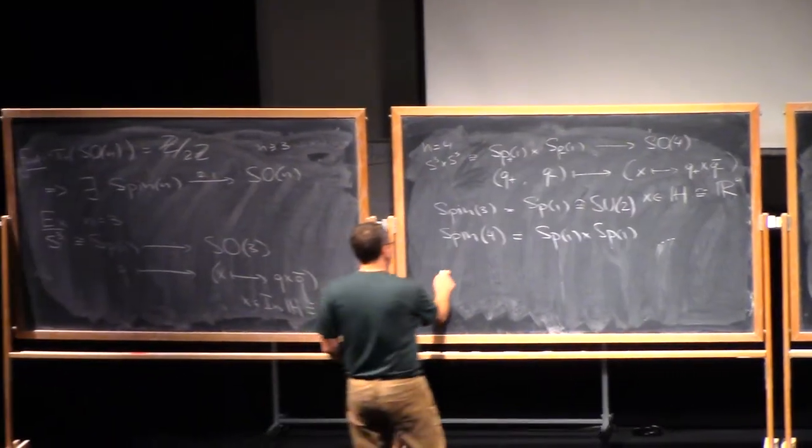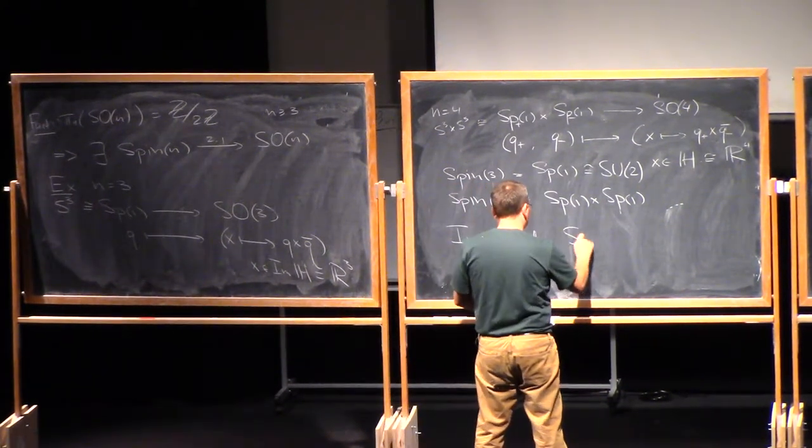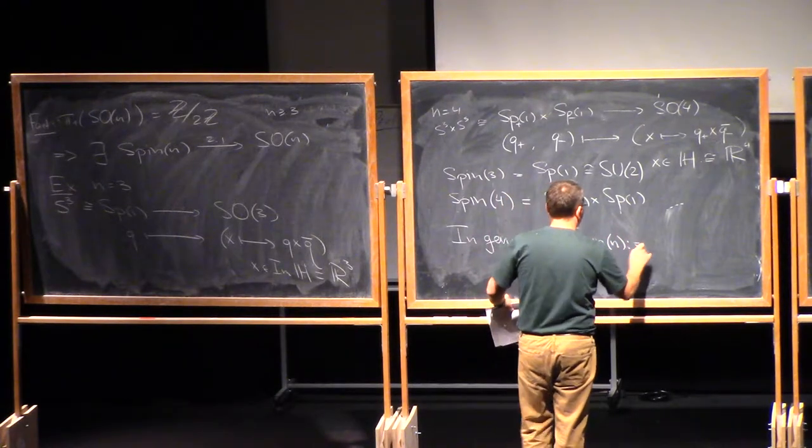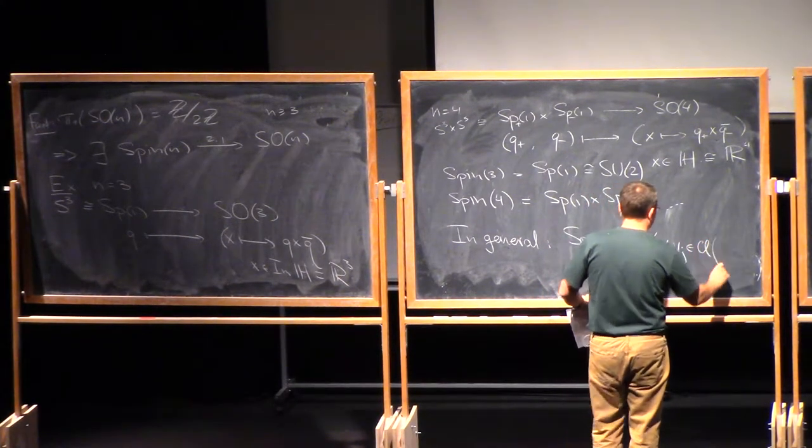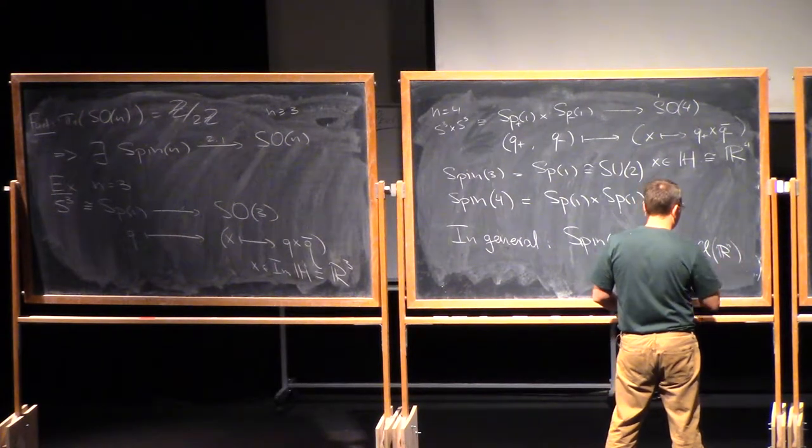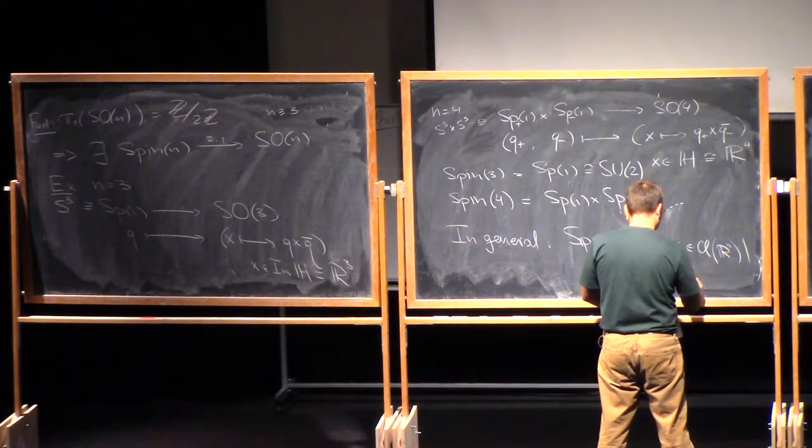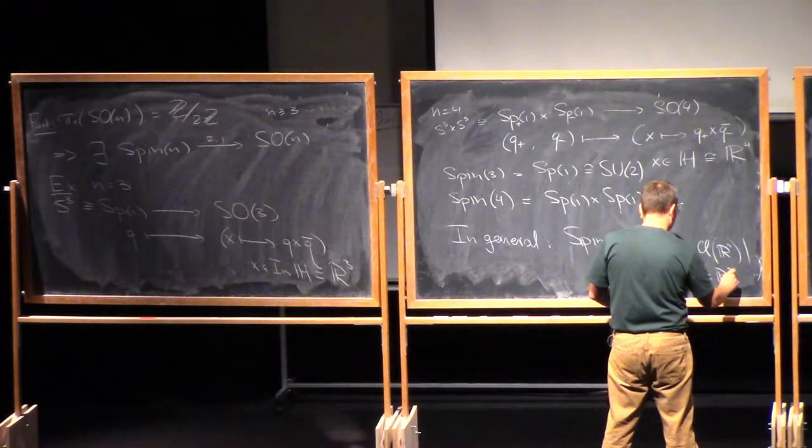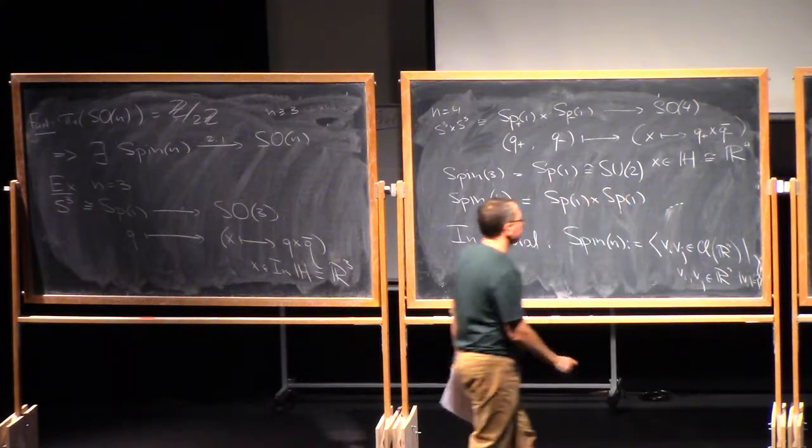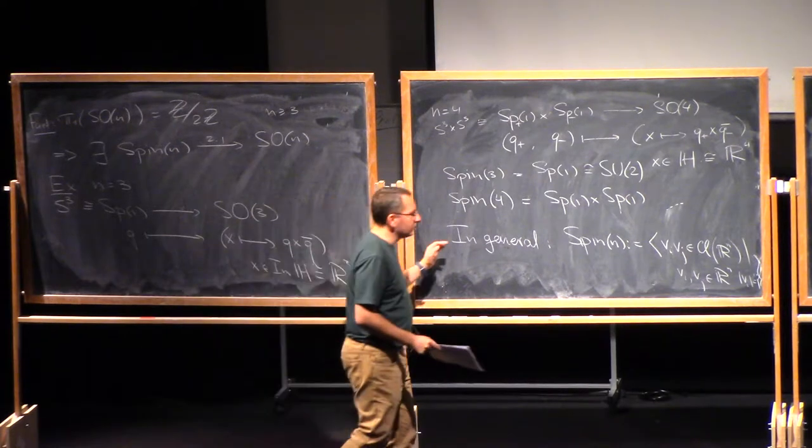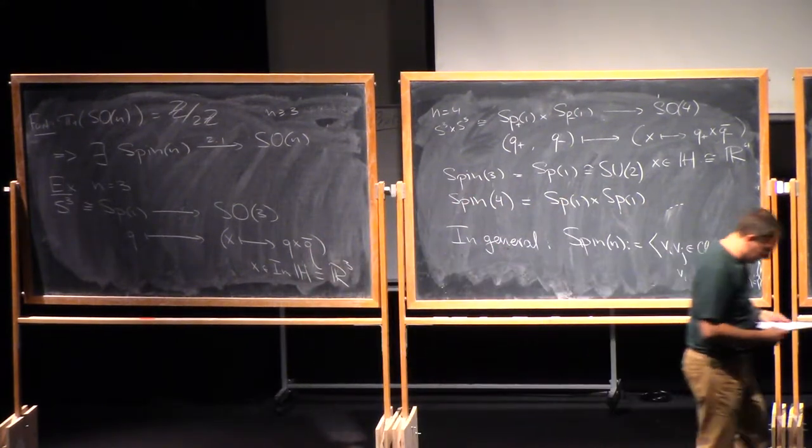In general, what you have is the group spin N can be defined to be the group generated by elements of the form VI, VJ, inside the Clifford algebra of Rn, where these are vectors in Rn of lengths 1. Okay, but the general dimension won't concern us too much. We will focus more on dimension 4, where we have extremely explicit construction of the group spin N.